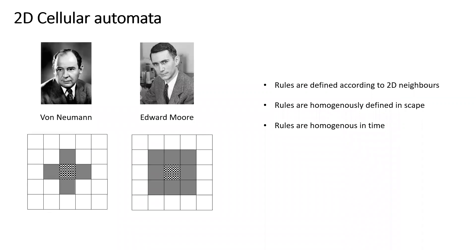What happens if we have two dimensions? In this case, we have to consider two-dimensional neighbors. There was a question in the last lecture about neighboring. If we want to consider four of our immediate neighbors, this is called the von Neumann neighborhood. We consider we are interacting with right, left, top, and bottom. At each time step, we look at our current state and what the four immediate neighbors are doing.